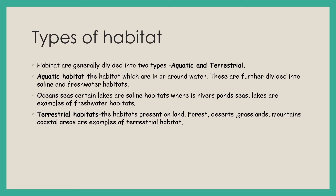Oceans, seas, and certain lakes are saline habitats because they have salty water, whereas rivers, ponds, and lakes are examples of freshwater habitats. Similarly, terrestrial habitat — the word 'terrestrial' comes from 'terra' meaning land. So all the habitats which are present on land are terrestrial habitats. These include forests, deserts, grasslands, mountains, and coastal areas.